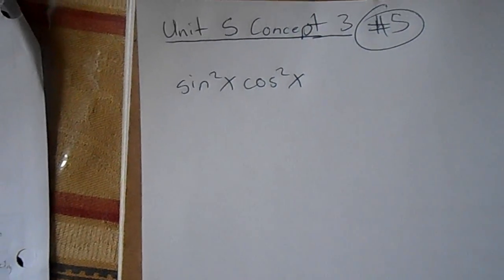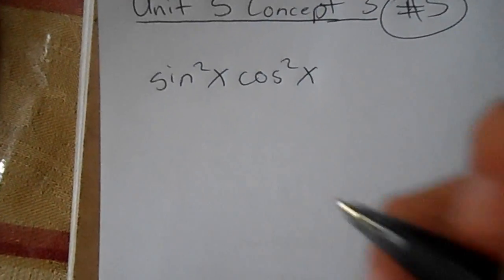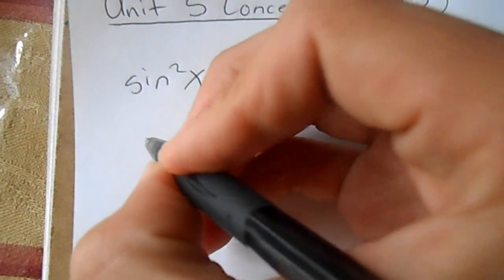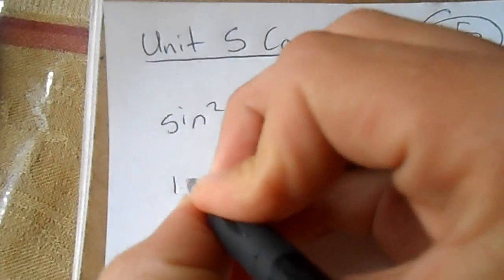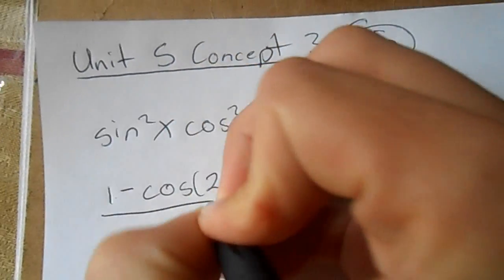So to simplify this expression, we substitute in these power reducing formulas. For sin²(x), it would be (1 - cos(2u))/2.